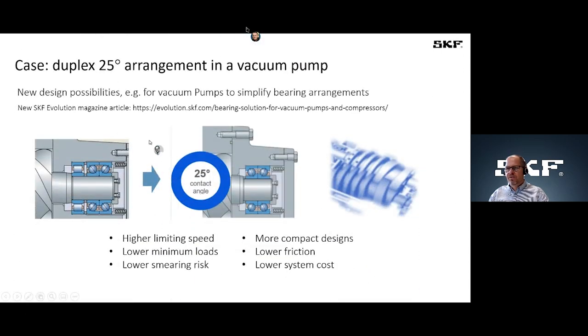And this leads also to other possibilities, for instance in this vacuum pump industry. So we have here typical arrangement of a CRB and two angular contact ball bearing, and for a new design you can do more compact designs, what leads to lower friction, is less amount of bearings are needed, and then at the end you end up with lower system costs. So this is another possibility what we want to present to you today.